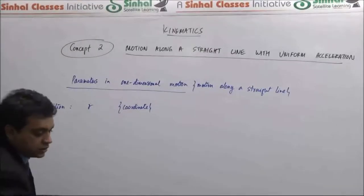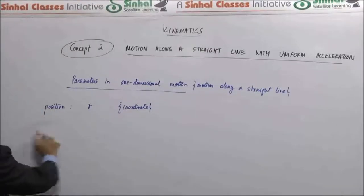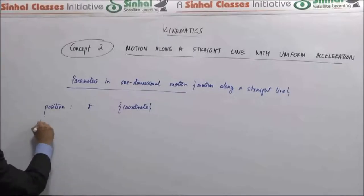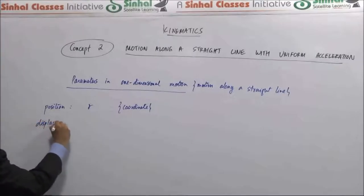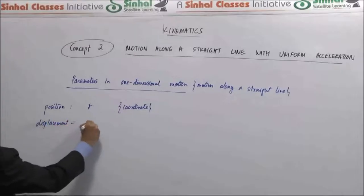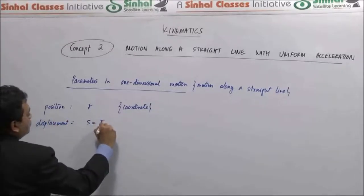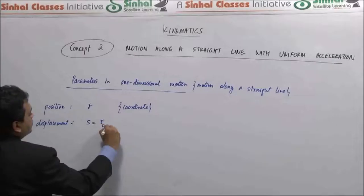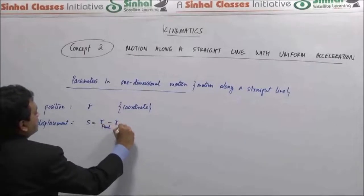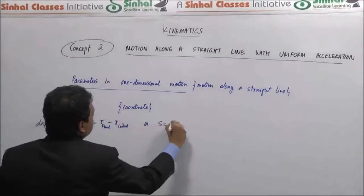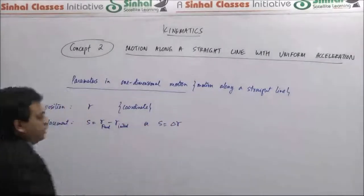We define displacement as the line joining the initial and final position. So it becomes final minus initial, or we can simply say that the displacement is delta r.